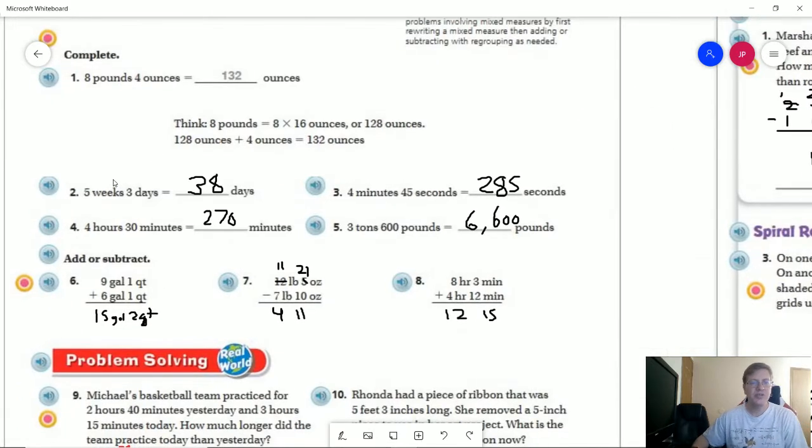So number one, we would take our number of weeks times seven to get 35. 35 plus 3 gives 38. Number three, 60 seconds in a minute times four gives us 240. 240 plus 45 gives us 285.